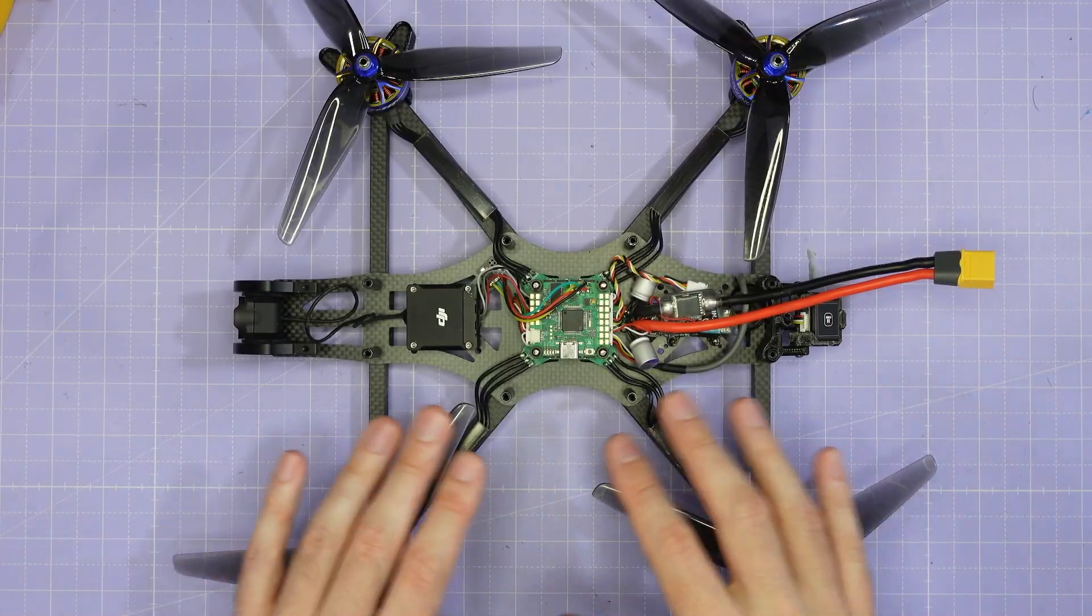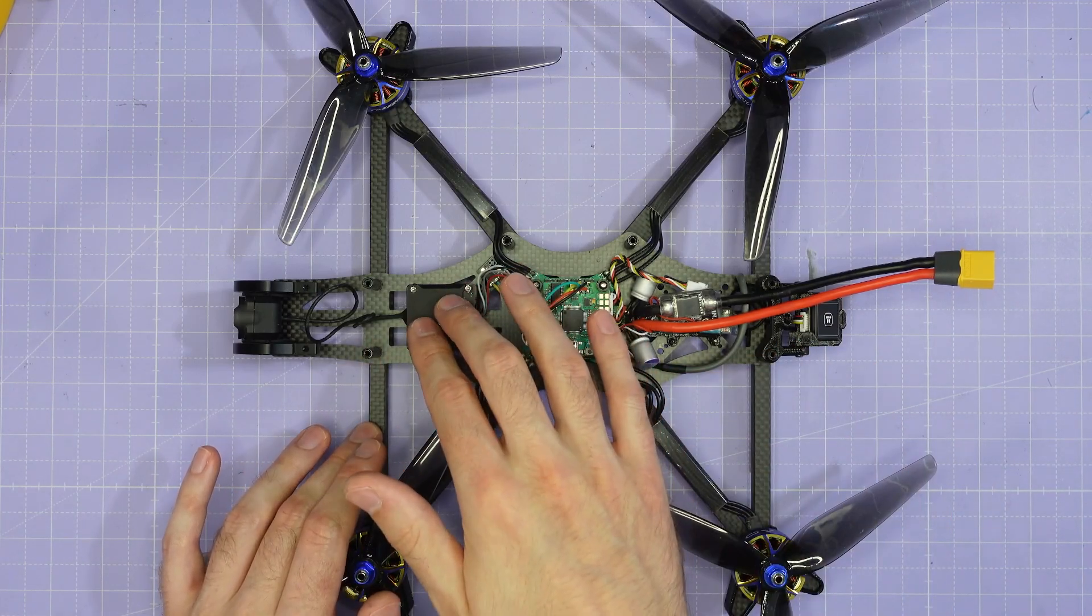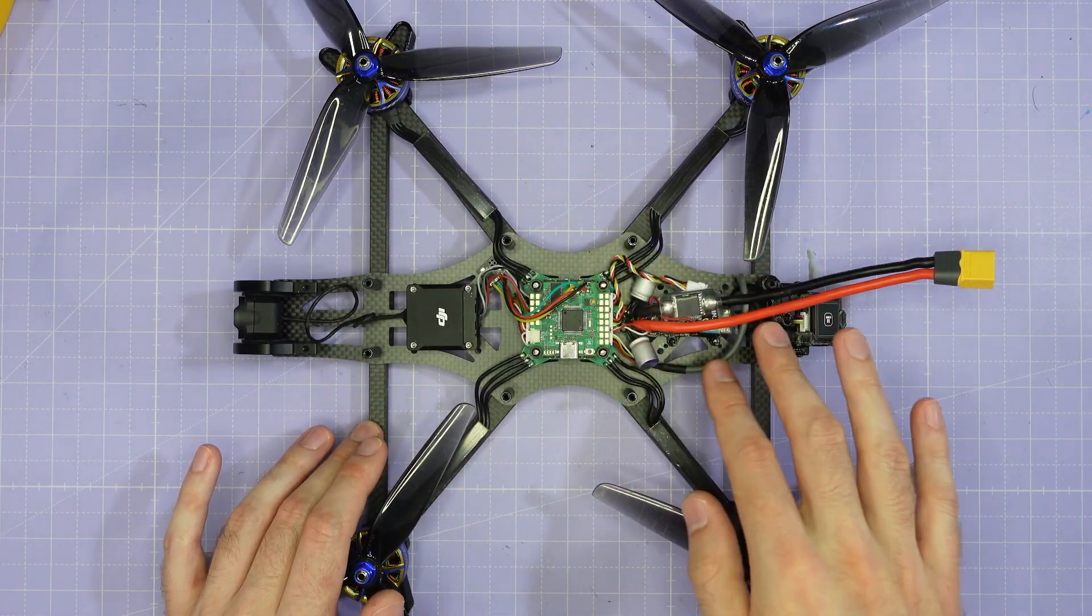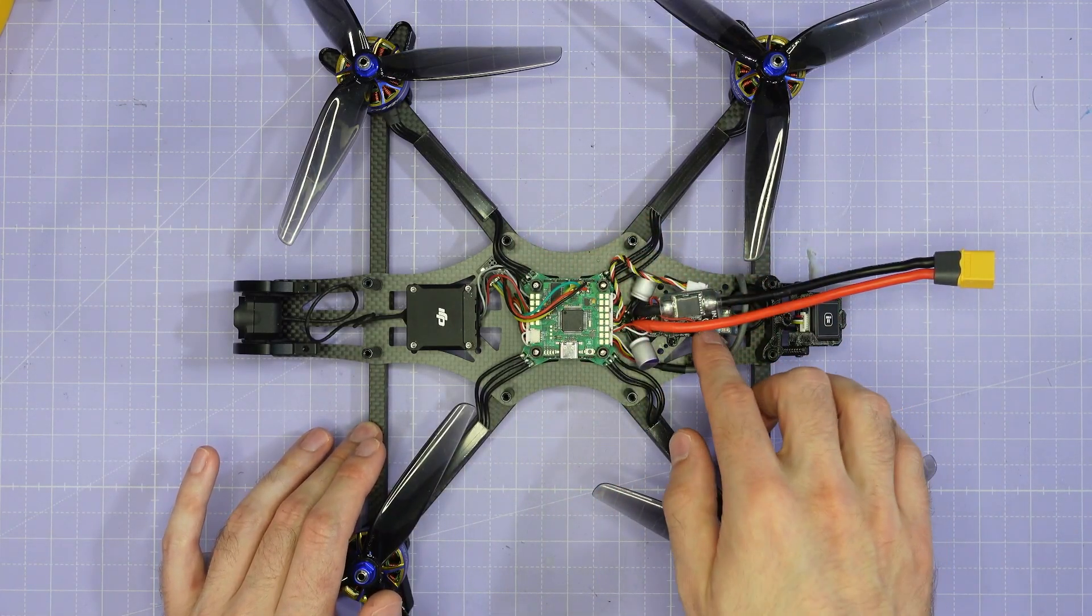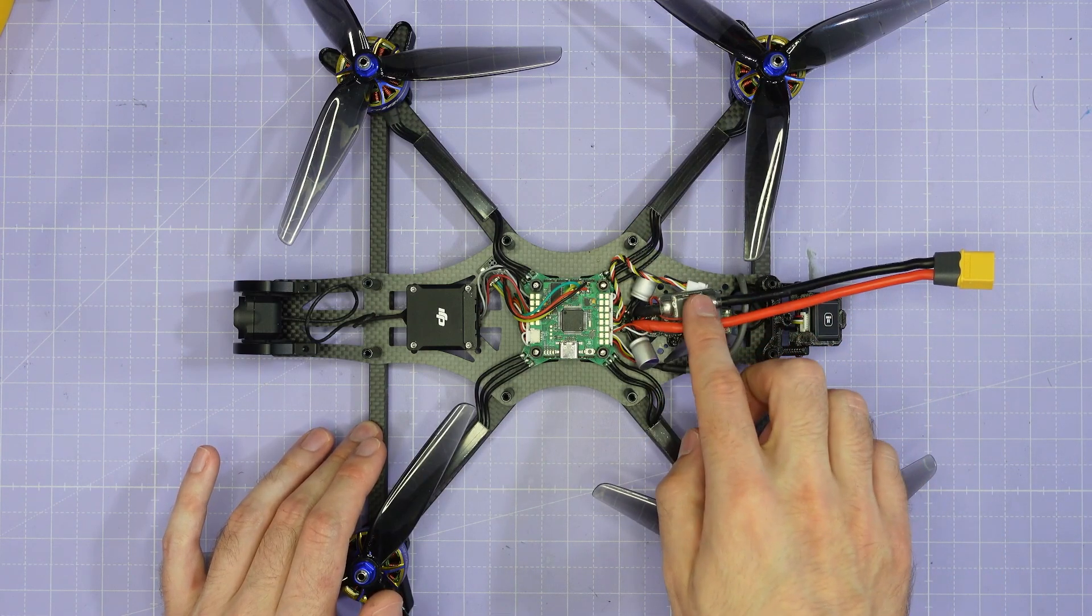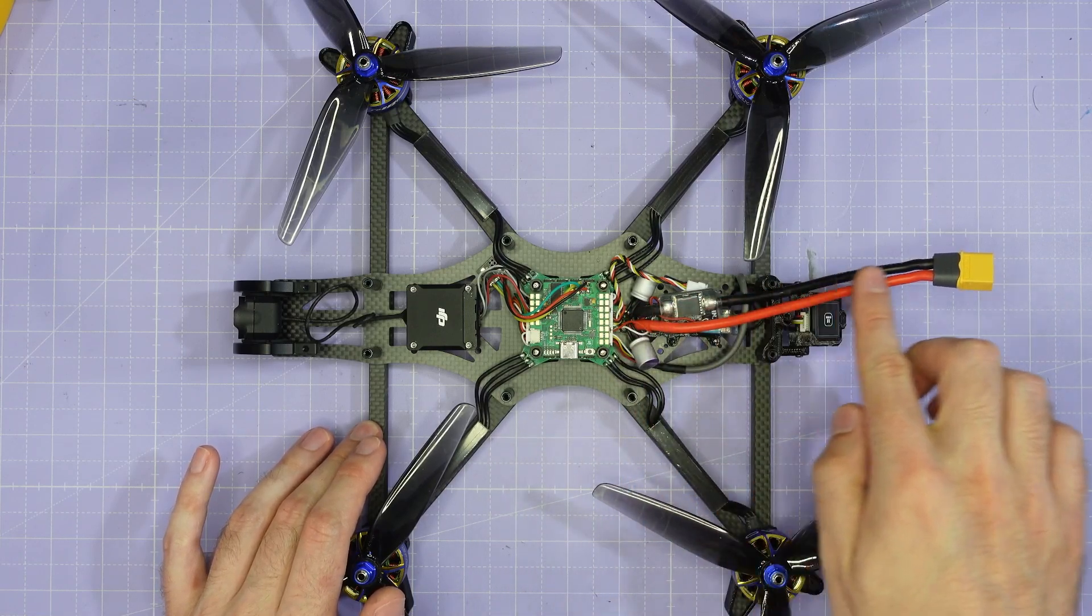This build guide is focusing mainly on the frame but in terms of component placement I would place your VTX or air unit up front, your electronic stack in the middle and leave the rear bay free for capacitors, your receiver, a buzzer or beeper, a spike absorber and maybe a spark suppressor like this and run your XT60 rearwards out of the back of the frame.